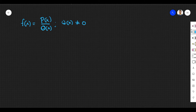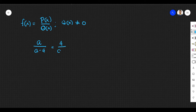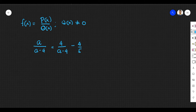Let's take, for example, a rational equation: a over a minus 4 equals 4 over a minus 4 minus 4 over 5. Let us solve this rational equation. For us to proceed with our first step, we need to identify what is our GCF, or greatest common factor, for this rational equation.